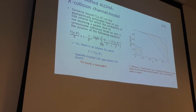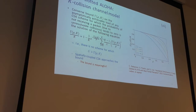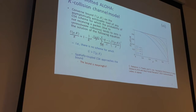We say we have a K-collision channel model and don't go into the details of physical realization. One way, as mentioned, is power control, PLNC, and signature coding. Another approach could be orthogonal spreading sequences: if all active users magically have orthogonal sequences, you can remove the interference for up to K of them.